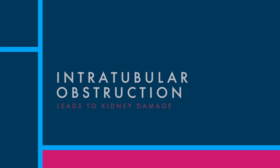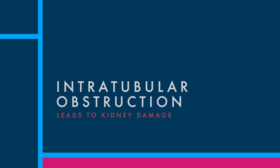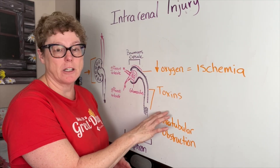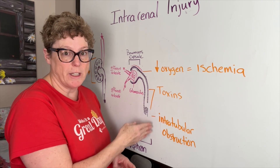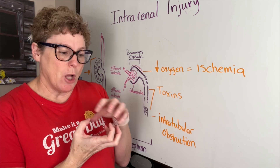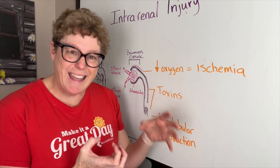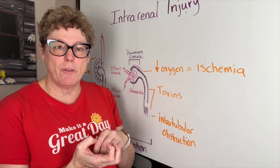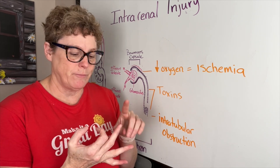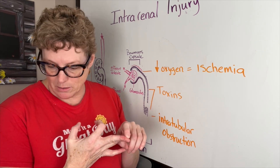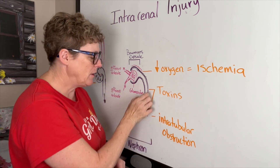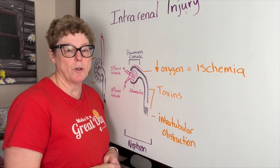The third category is intratubular obstruction. This can be caused by toxin damage to the tubular wall, causing epithelial cells to shed and clot, blocking the proximal tubule. Other risk factors include the presence of myoglobin, hemoglobin in the urine, and uric acid.